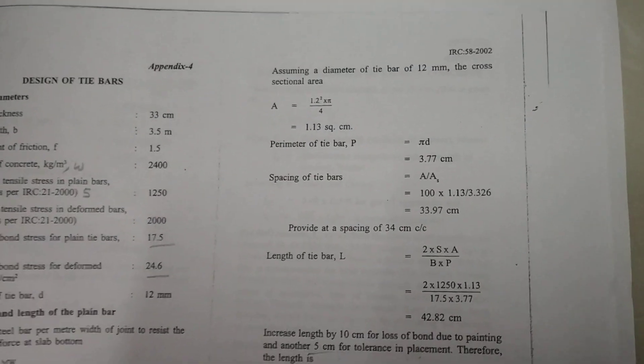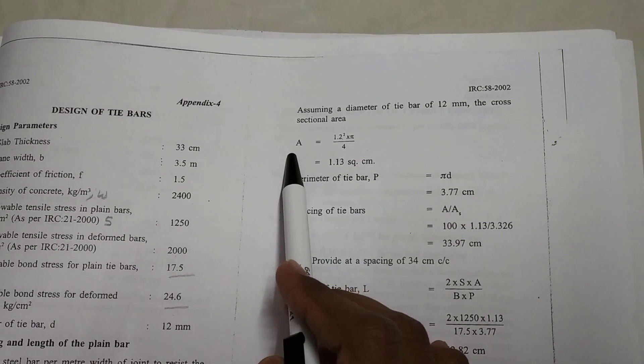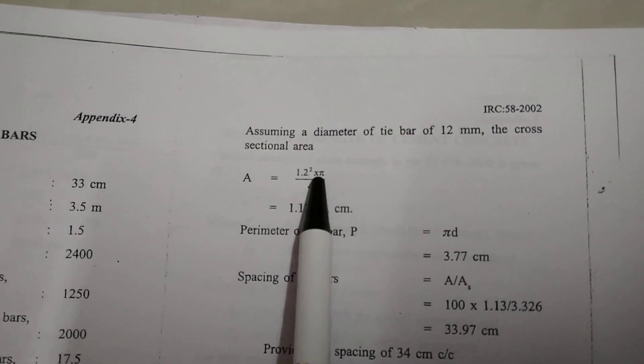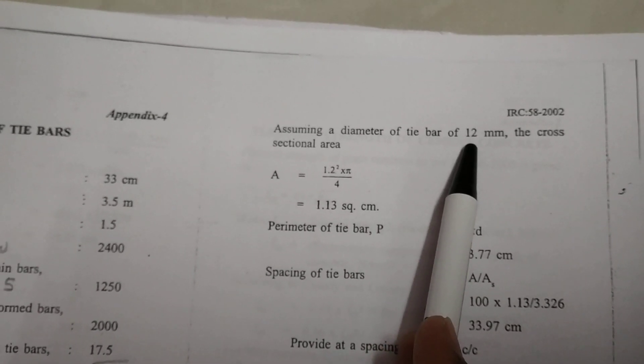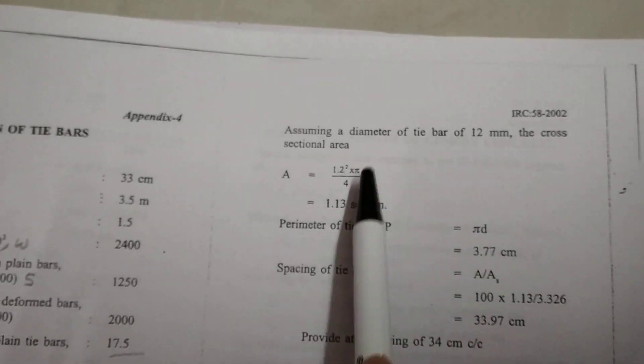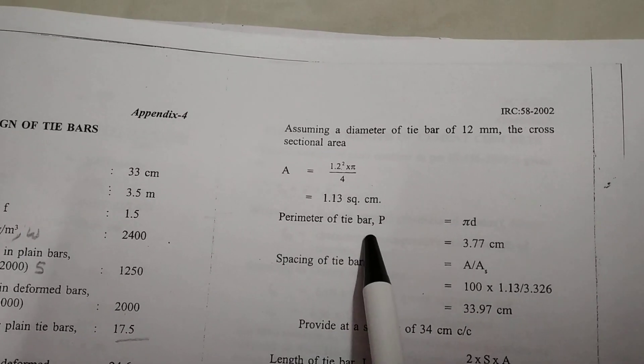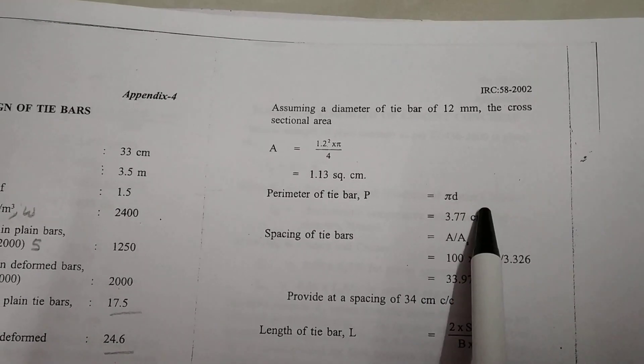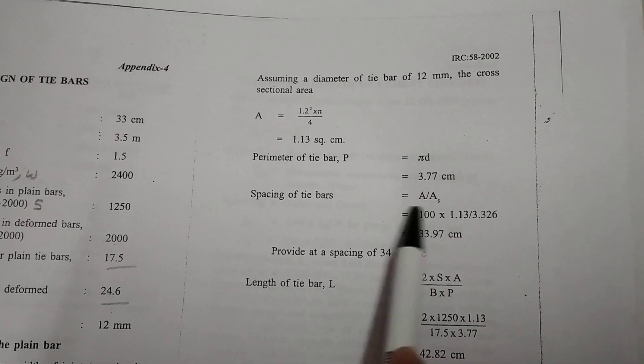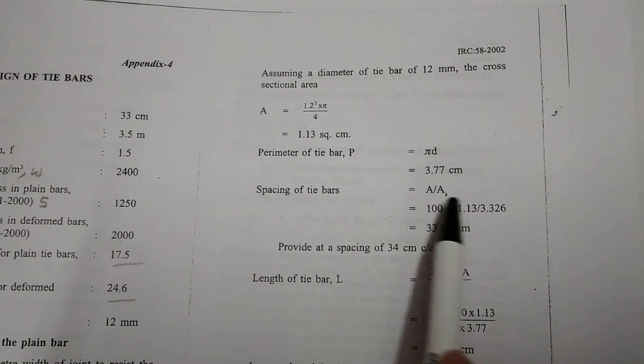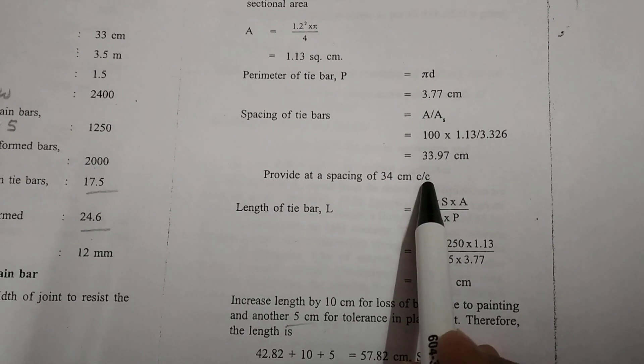Now we want to calculate spacing. After calculating this we have to find the cross sectional area of the tie bar. The formula is A equal to pi D square by 4. So we are assuming it as 12 mm. We are converting it into square centimeters. Always you have to calculate in terms of square centimeters. Perimeter of tie bar is given by the formula P equal to pi D. You can substitute all the values. Now spacing of tie bar equals cross sectional area of tie bar by area of steel. So we have to provide so much spacing between center to center.